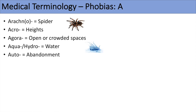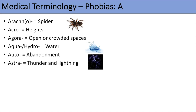The next prefix is auto, meaning abandonment. Autophobia means a fear of abandonment — really a fear of being alone or by oneself. The next prefix is astra, which means thunder and lightning, so astrophobia would be a fear of thunder and lightning. Another one is aero, meaning flying, so aerophobia would be a fear of flying.